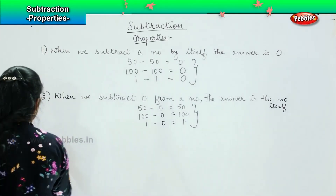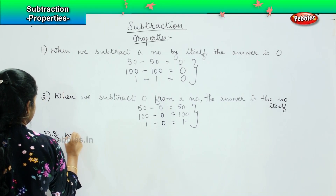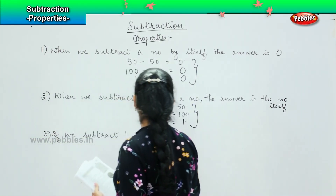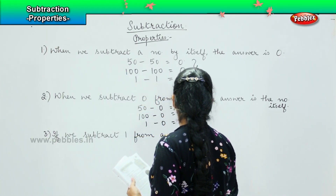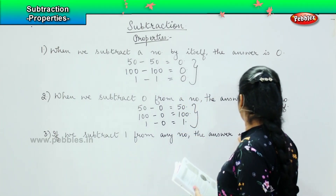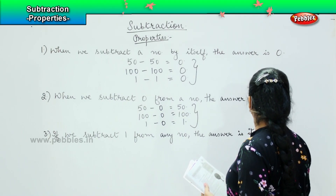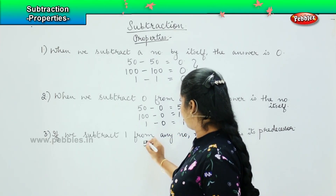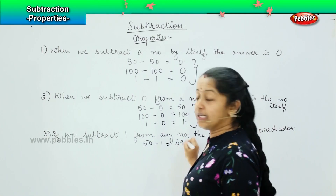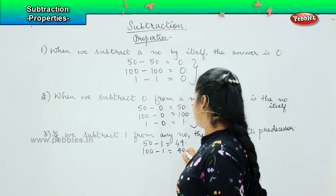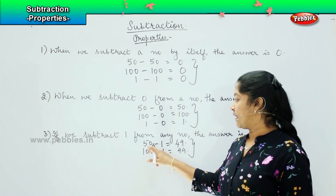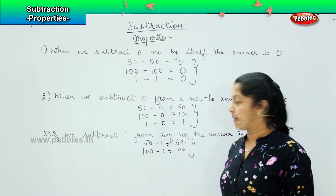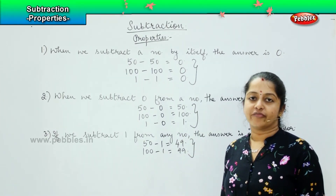Coming to the next one, the next property says that if we subtract one from a number, the answer is its predecessor — a number before the given number. For example, I write fifty minus one, my answer is forty-nine. I say hundred minus one, my answer is ninety-nine. So in these cases, the predecessor of fifty is forty-nine, and the predecessor of hundred is ninety-nine. Whenever you subtract one from a number, the answer will be the predecessor of the given number.